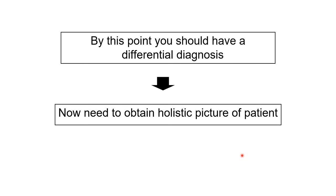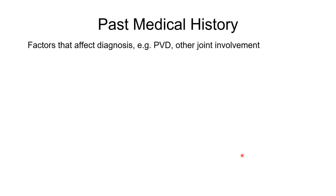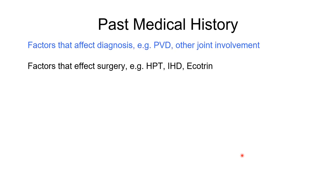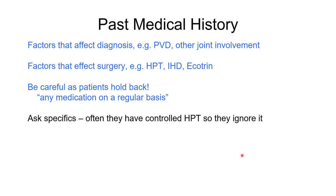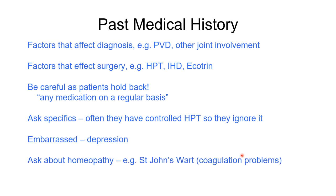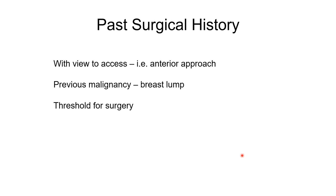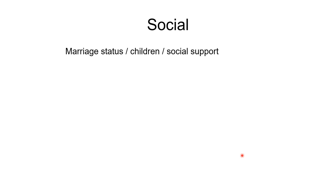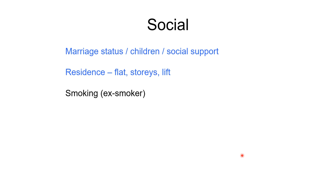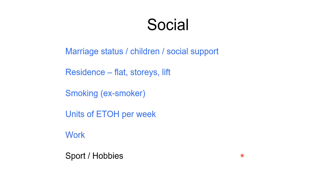We then need a holistic picture of this patient in terms of their past medical history. Do they have peripheral vascular disease? Do they have other joint involvement suggesting an inflammatory arthropathy? Do they have factors that may increase their risk if we operate, such as hypertension or ischemic heart disease? Do they use medications which might increase bleeding? Ask specifically about things like hypertension, depression — which patients often neglect to tell us — and whether they use homeopathic agents. If a genetic condition is suspected, inquire about family members. Ask about previous surgery, social stresses, lifestyle expectations, whether they have stairs to climb, whether they smoke, whether they are excessive drinkers, and what work they do.